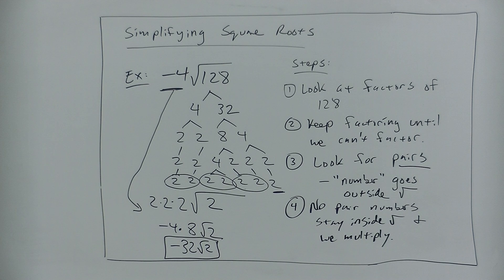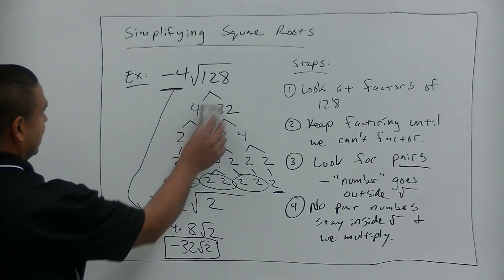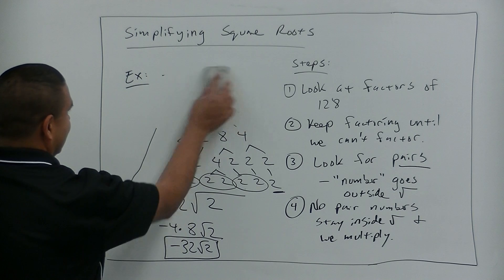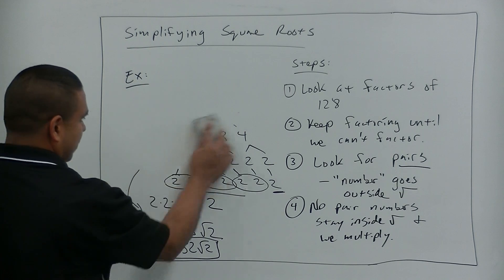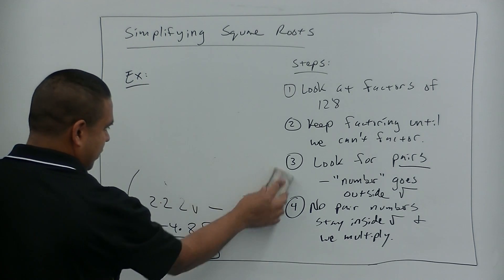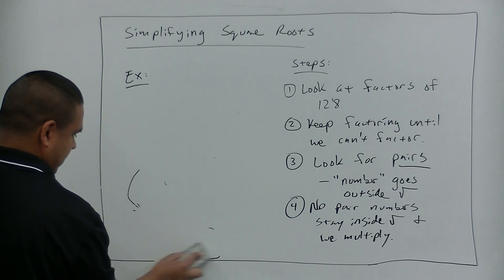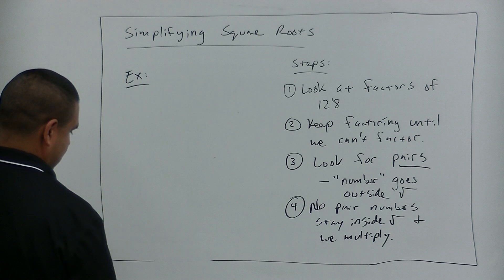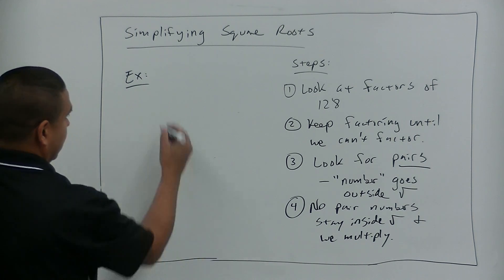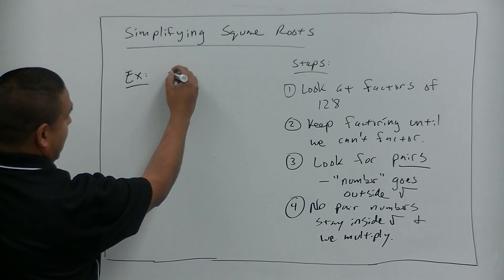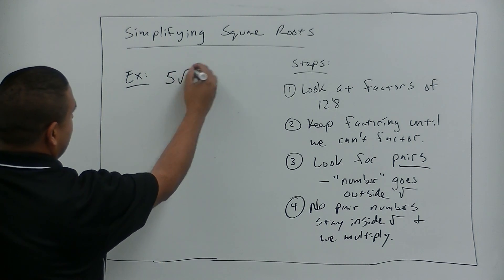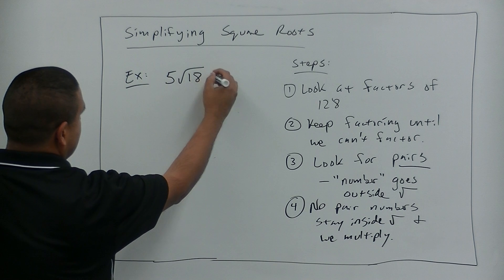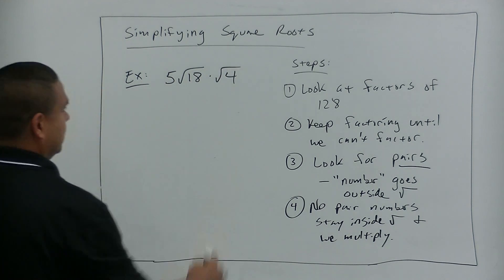I'm going to let you guys try this last one — a little tricky but I think you can handle it. This will be our last example. We'll try 5 times the square root of 18 times the square root of 4. Go ahead and try that, I'll give you about 90 seconds.